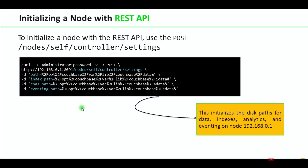To initialize a node with the REST API, we use the POST method and call the endpoint node/self/controller/settings, providing the paths. The forward slash is URL-encoded as %2F, so the path /opt/couchbase/var/lib/couchbase/data is encoded accordingly. We provide paths for data, index, analytics, and eventing services. This command initializes the disk path for all four services.